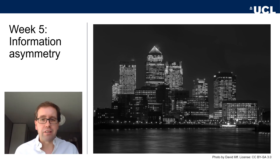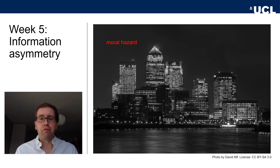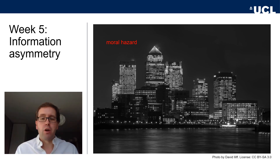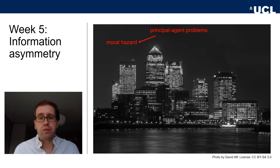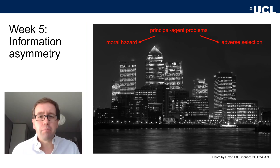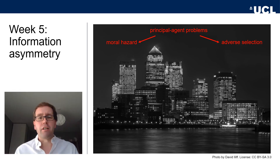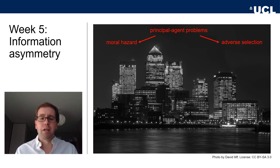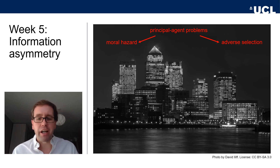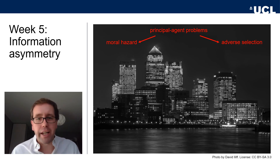This egregious example of moral hazard is a type of principal-agent problem, with the other type being adverse selection. These twin problems of moral hazard and adverse selection that characterize principal-agent problems are at the heart of the type of market failure caused by asymmetric information, and that is the topic of today's lecture.